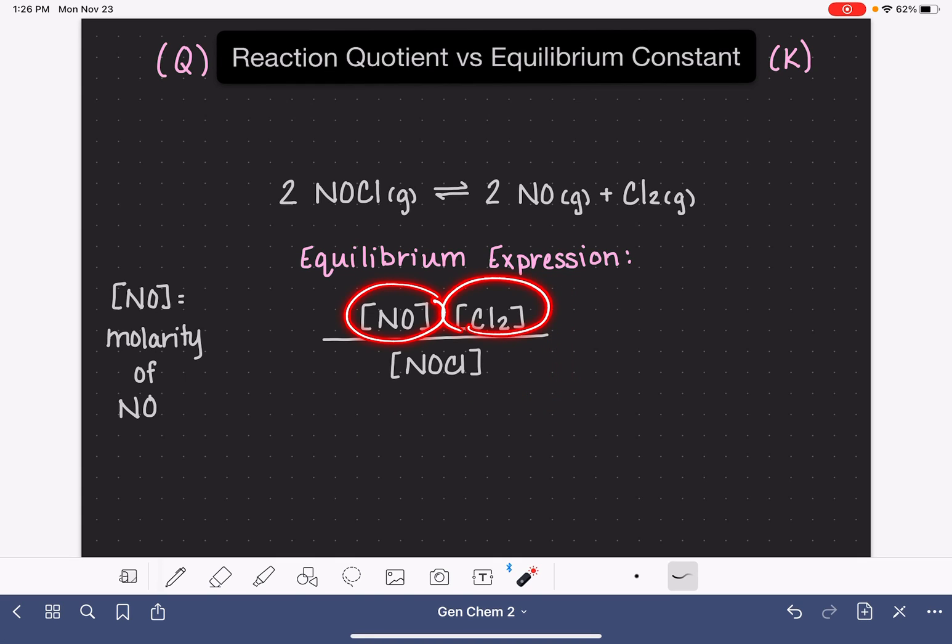every one of these molarities gets raised to the stoichiometric coefficient. The stoichiometric coefficient of NOCl is 2, which means that the molarity of NOCl is going to be squared. The stoichiometric coefficient of NO is also 2, so that means this is going to be squared. And Cl2, because its coefficient is 1, we're usually not going to put a 1 here. So the mantra that we have for writing an equilibrium expression is that it is products over reactants raised to their stoichiometric coefficients.